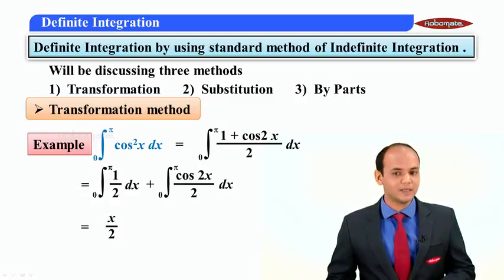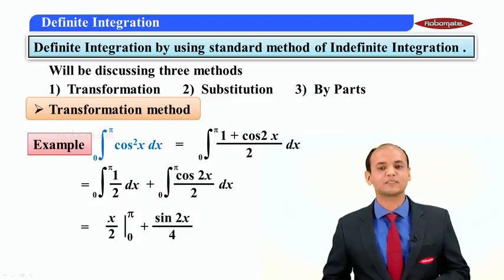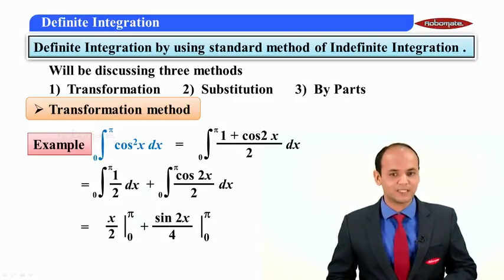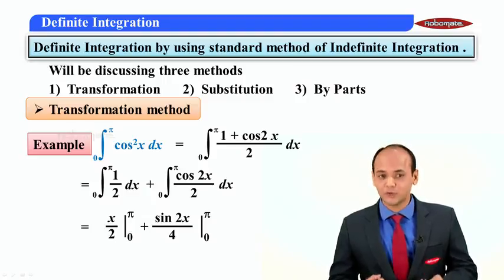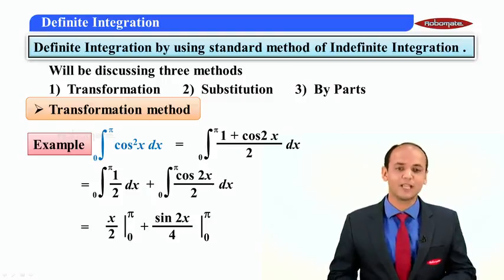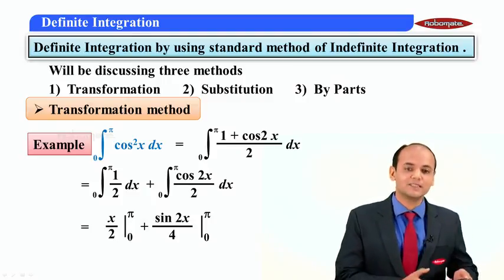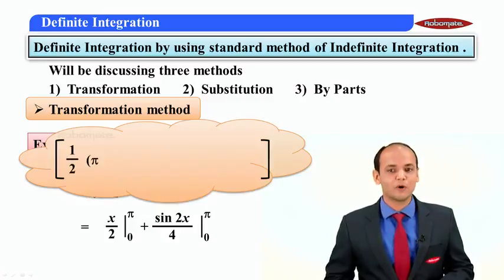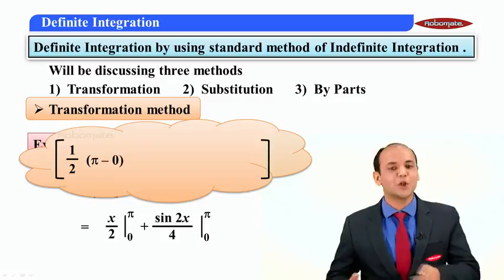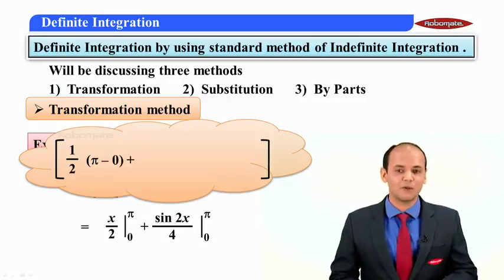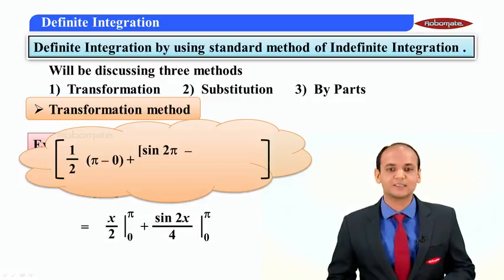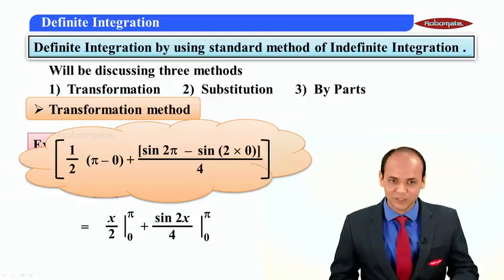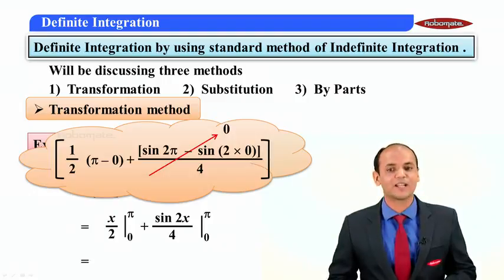Applying the limits 0 to π, plus the integration of cos 2x is sin 2x / 2, so the second term becomes sin 2x / 4 with limits 0 to π. Now we substitute the limits: for x/2, it becomes (1/2) × (π − 0); for the second term, it becomes (sin 2π − sin 0) / 4. Since sin 2π = 0 and sin 0 = 0, the second value becomes 0, and the final answer is π/2.